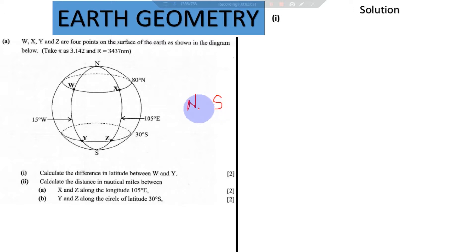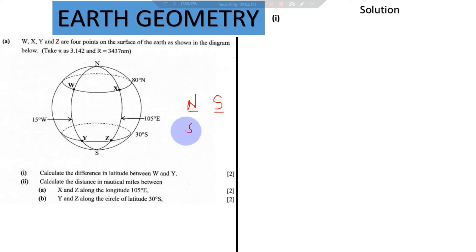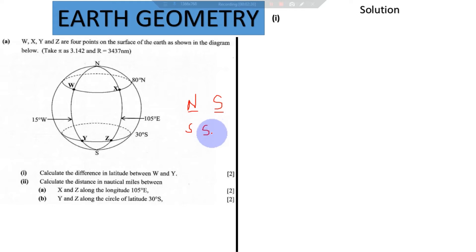If you have two towns and you are trying to calculate the difference in latitudes — if one is on the North and the other is on the South, the poles are different, so you add their latitudes. But if they are both on the same side of the hemisphere, you subtract. This also applies to longitudes: West-West you subtract, but West-East you add the longitudes.